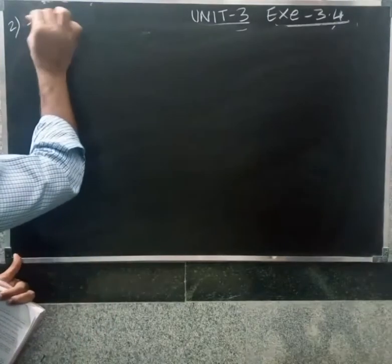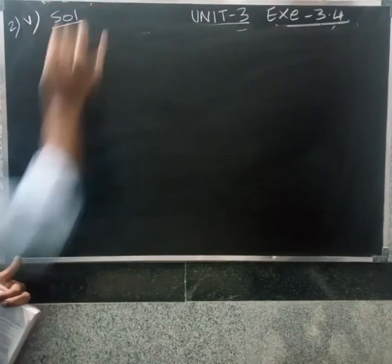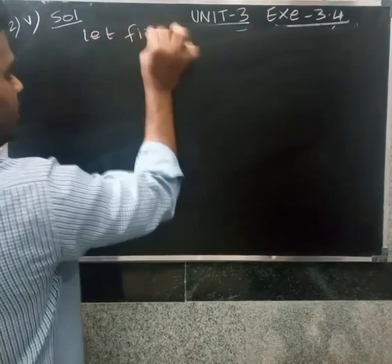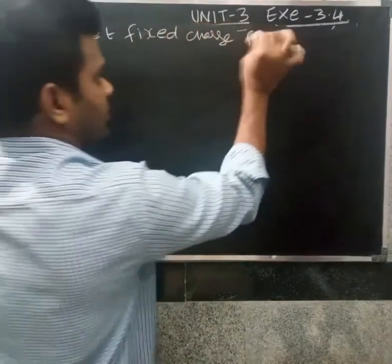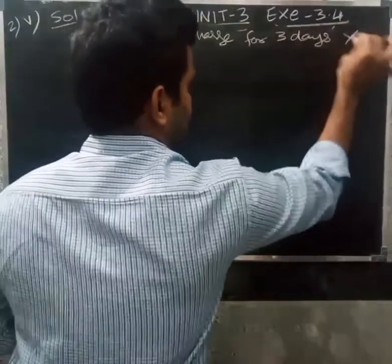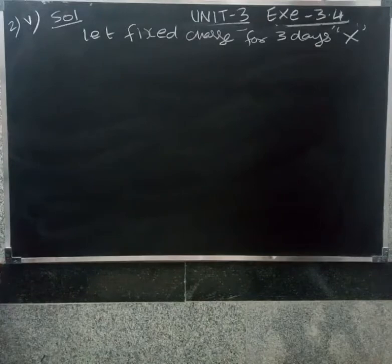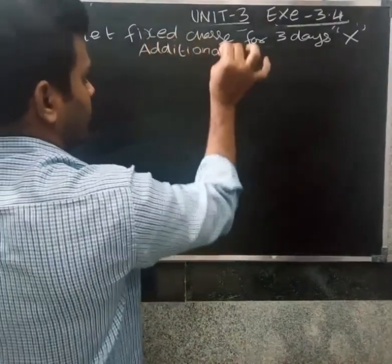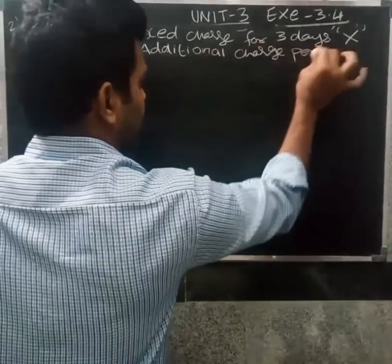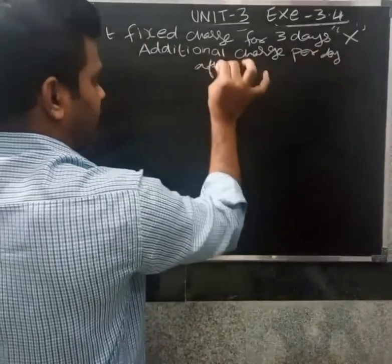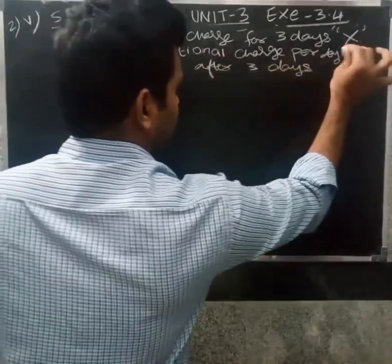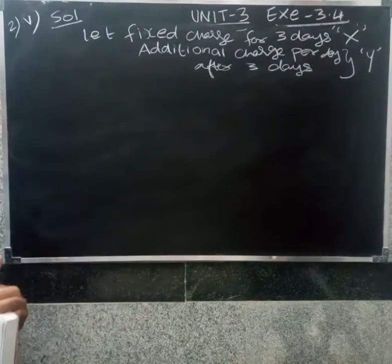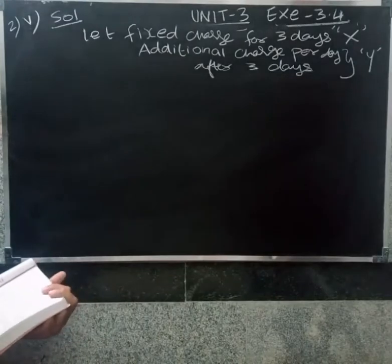So how do we do it? First, let x be the fixed charge for 3 days and y be the additional charge per day beyond 3 days.